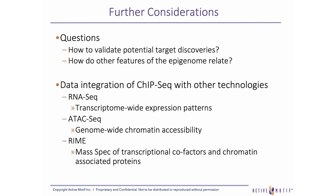Before we say goodbye, it's worth noting that ChIP-seq isn't always the end of the search for answers. Questions may persist such as: how does one go about validating potential targets discovered with ChIP-seq? Or how do other features of the epigenome relate? For these, we may need to look at integration of ChIP-seq with other technologies. Examples may include RNA-seq, which measures transcriptome-wide expression patterns; ATAC-seq, which stands for Assay for Transposase Accessible Chromatin Using Sequencing and measures genome-wide chromatin accessibility; and RIME, which stands for Rapid Immunoprecipitation Mass Spectrometry of Endogenous Proteins, and deduces transcriptional cofactors and chromatin-associated proteins. These are all available services offered by ActiveMotif.